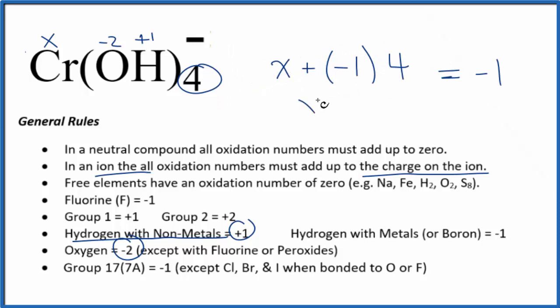Solving for X, we have X minus 4 equals a minus 1. We could add a positive 4 to each side. X will equal a positive 3.